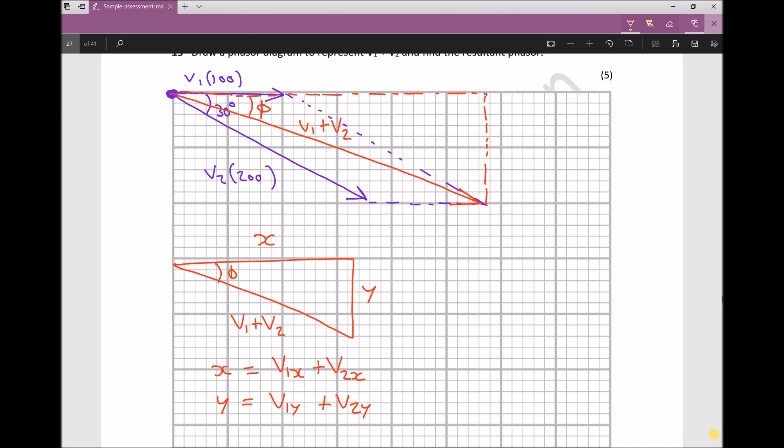How do we find V1x, V2x, V1y, and V2y? Using trigonometry. V1 travels from left to right, so V1 only has an x component. V1x equals 100 because that was the length of that line, and V1y is 0 because V1 doesn't have a y component.